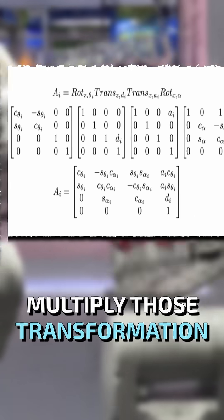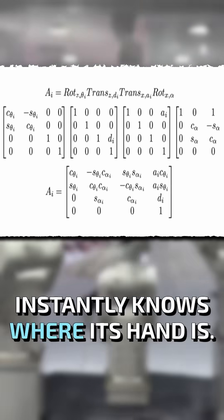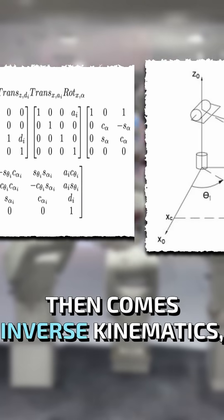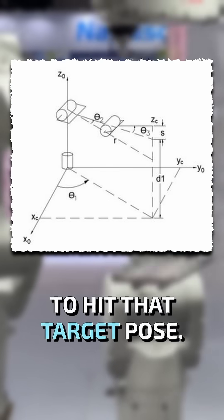Multiply those transformation matrices together, and the robot instantly knows where its hand is. Then comes inverse kinematics, solving the reverse problem to hit that target pose.